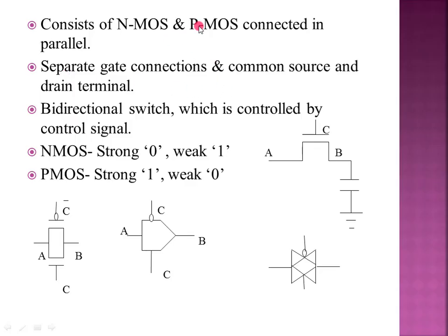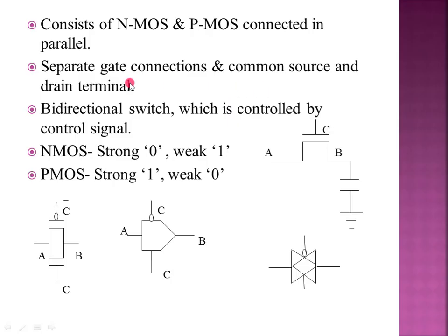Now, we are going to use PMOS in parallel. This is the diagram — this is PMOS and this is NMOS. The source and drain are connected in parallel to form common terminals. But the gates are separate. So there are separate gate connections with common source and drain terminals.